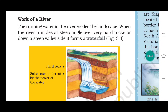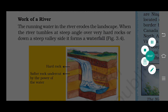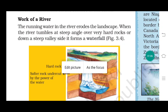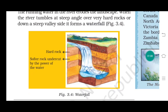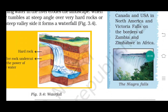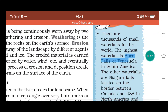When the river tumbles at steep angles over very hard rocks or down a steep valley side, it forms a waterfall. You can see here in the picture the steep flow of water from a hard rock, and from the side you can see the waterfall scene. Water flows from a high stock and creates a waterfall.